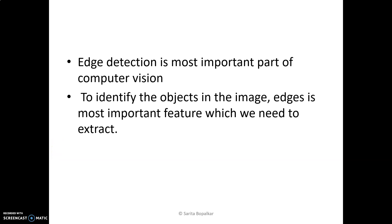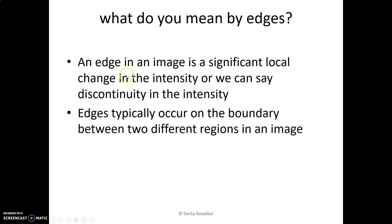Edge detection is the most important part of computer vision or machine vision. To identify objects in an image, edges are the most important feature we need to extract. An edge in an image is a significant local change in the intensity, or we can say a discontinuity in the intensity.